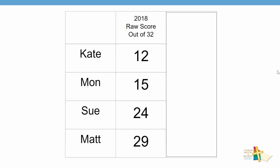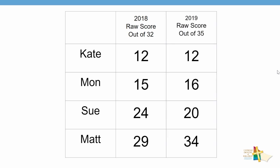Here's an example of a set of students who undertook an assessment with the following raw scores. As you can see, we can compare the students against each other. Subsequently the students sat a different test the following year. We cannot compare these two tests — we can't make any statements as to whether the children are making progress or not.